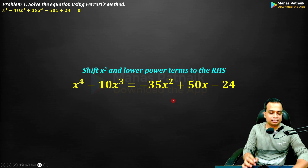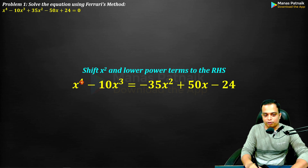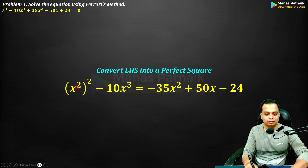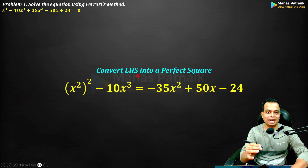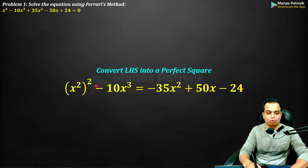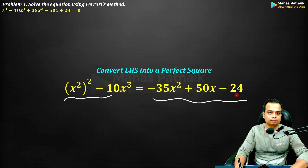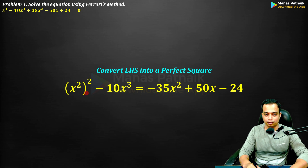Next, x⁴ can be written as x² and its square. The core philosophy of Ferrari's method is to convert both LHS and RHS into perfect squares, so let's see where we can reach.